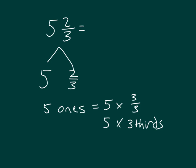Writing that out, we have 5 and 2 thirds equaling 5 times 3 thirds. We just rewrote that 5, and then we still have 2 thirds there that we would have to add back in.